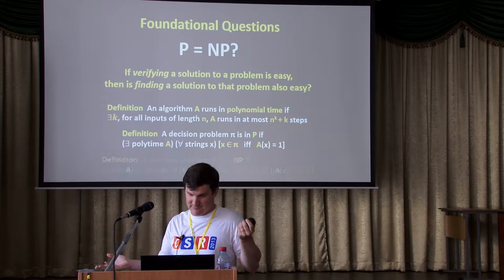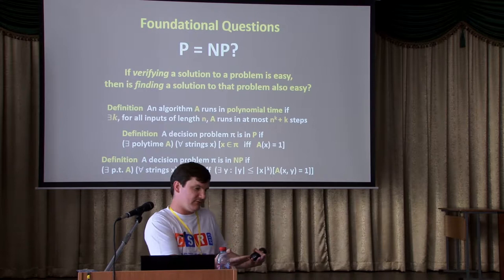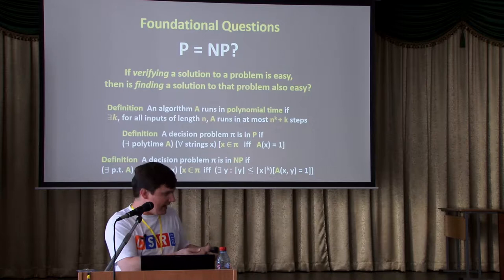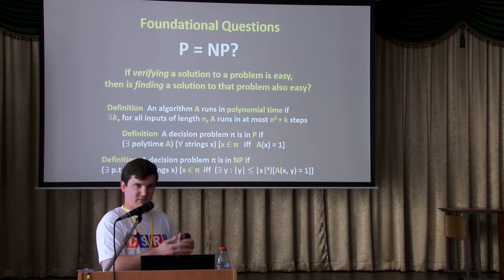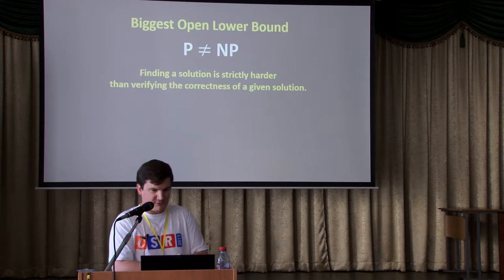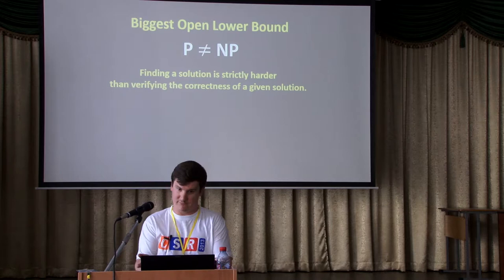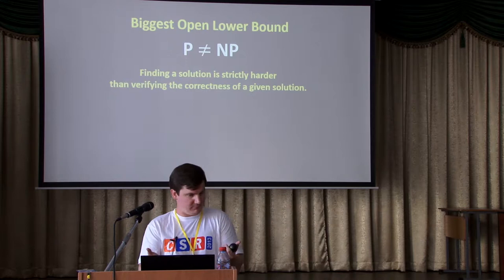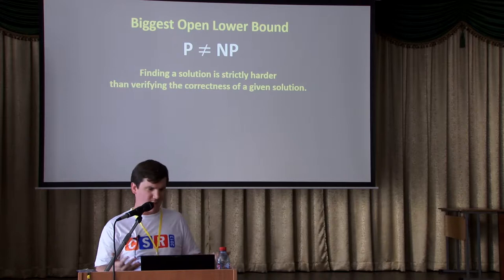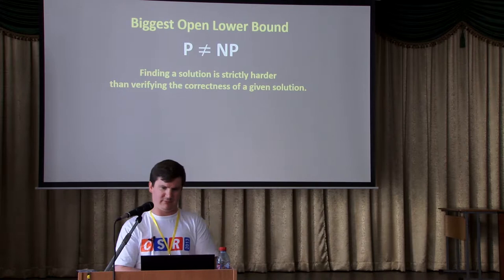We have these notions of polynomial time and NP. NP is essentially the class of problems for which, when they have a solution, they have a very short solution that can be verified efficiently. Problems in P are problems you can simply solve efficiently. We want to know the difference between these, and the biggest open lower bound is that P is different from NP — that finding a solution is strictly harder than verifying the correctness of a given solution.